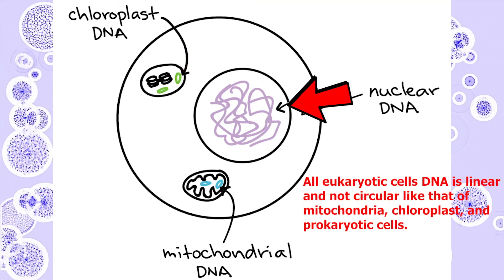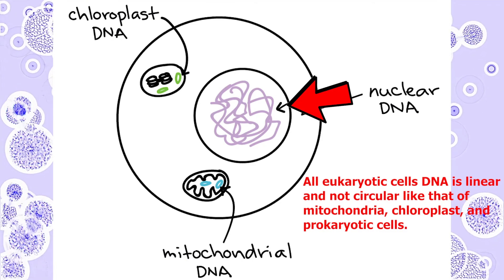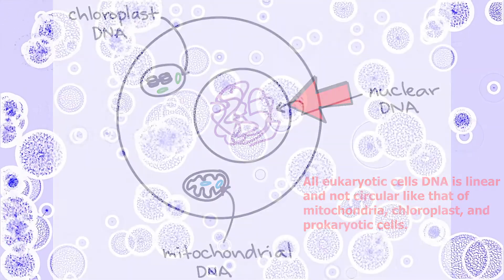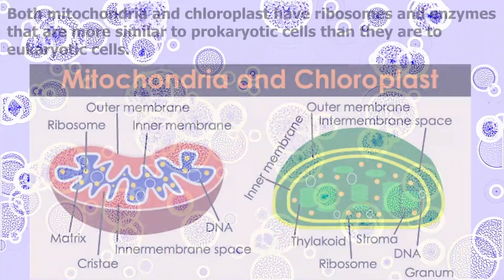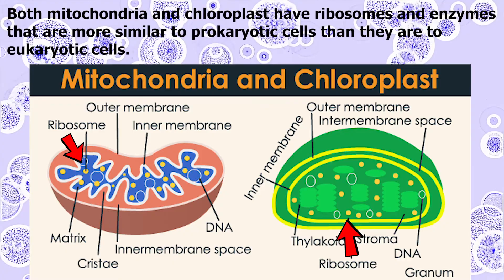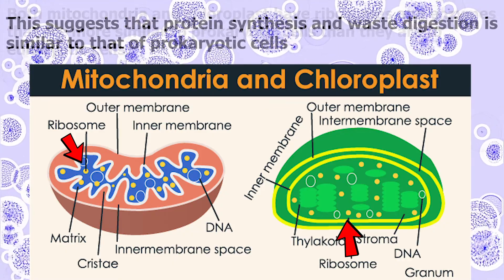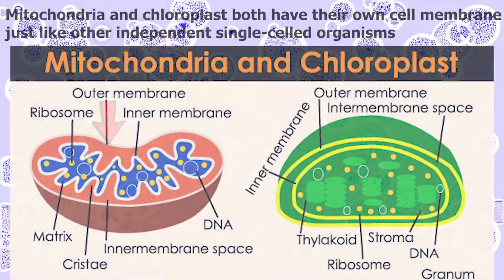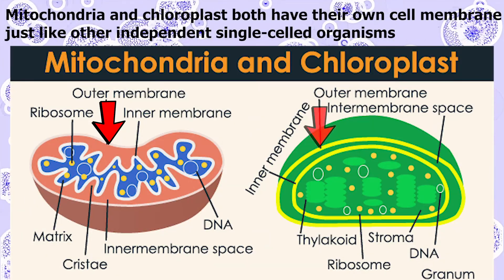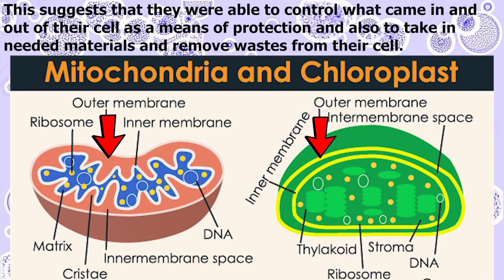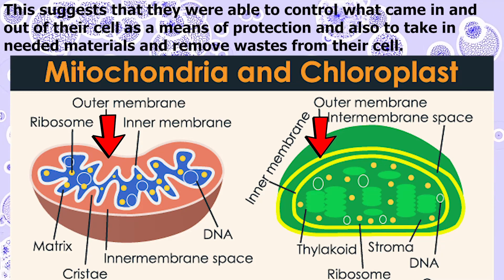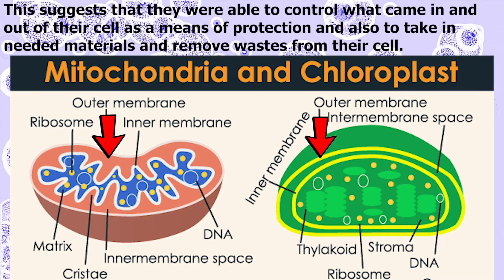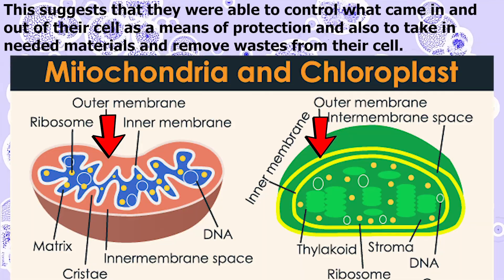All eukaryotic cells' DNA is linear and not circular like that of mitochondria, chloroplasts, and prokaryotic cells. Number two: both mitochondria and chloroplasts have ribosomes and enzymes that are more similar to prokaryotic cells than to eukaryotic cells, suggesting that protein synthesis and waste digestion is similar to that of prokaryotic cells. Number three: mitochondria and chloroplasts both have their own cell membranes just like other independent single-celled organisms, suggesting they were able to control what came in and out of their cell for protection and to take in needed materials and remove waste.